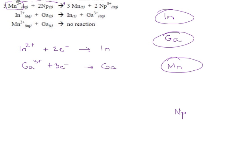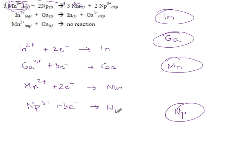Manganese is next. That goes from plus two down to zero. And neptunium is at the very bottom. Neptunium goes from three plus down to zero. So neptunium picks up three electrons and turns into neptunium metal.